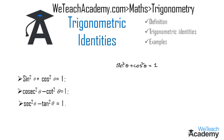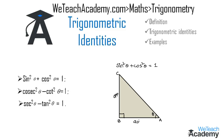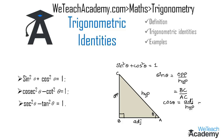Consider a right-angle triangle ABC with angle B = 90° and angle CAB = θ. The side opposite to the angle is BC, the adjacent side is AB, and the hypotenuse is AC. We know that sin θ = opposite side / hypotenuse = BC / AC, and cos θ = adjacent side / hypotenuse = AB / AC.